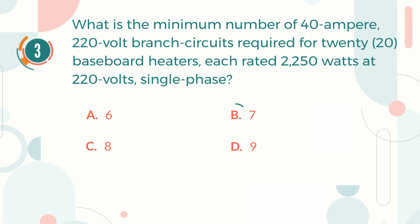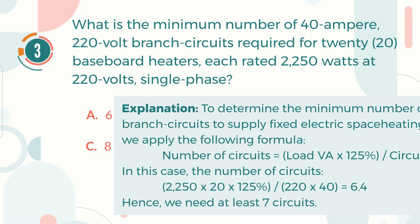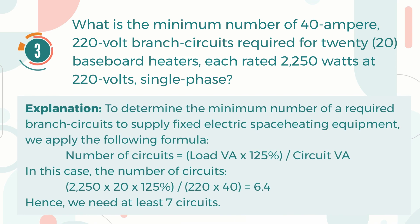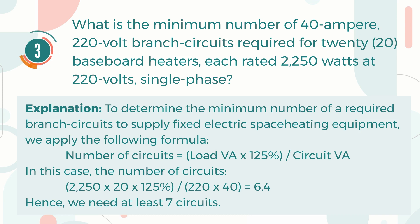The correct answer is B. 7. Explanation: To determine the minimum number of required branch circuits to supply fixed electric space heating equipment, we apply the following formula: number of circuits equals 1.25 times the load in volt-amperes or watts, divided by the circuit in volt-amperes or watts. In this case, we get 6.4, which must be rounded to the next integer. Hence, we need at least 7 circuits.